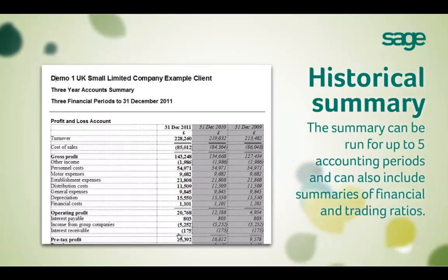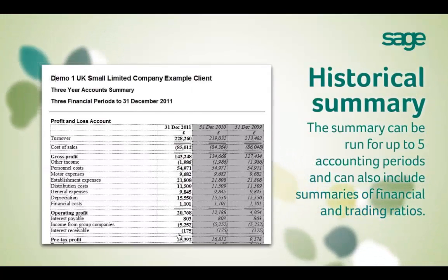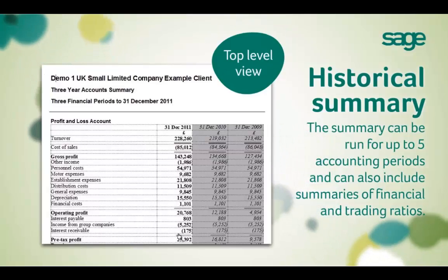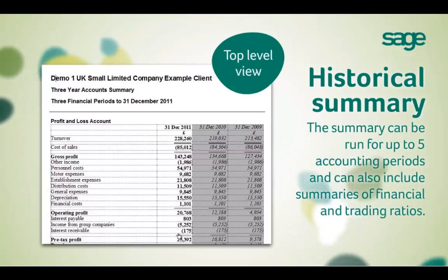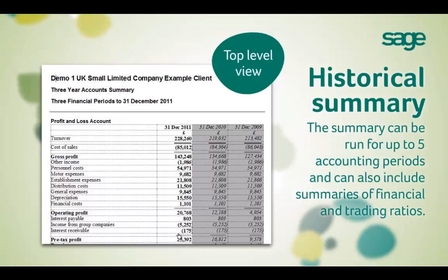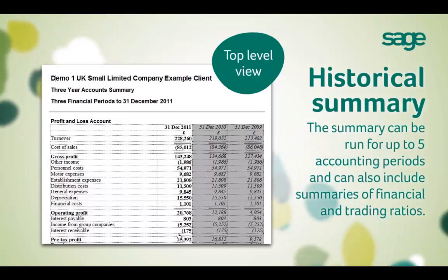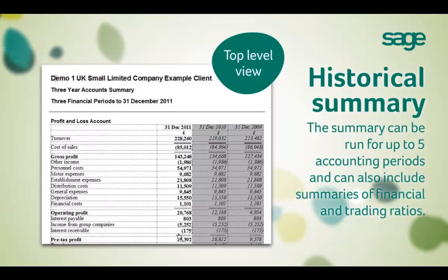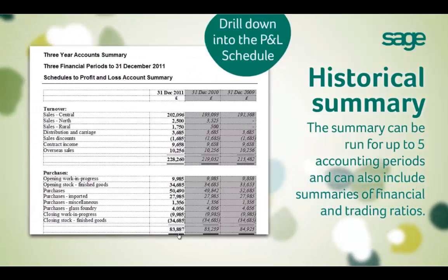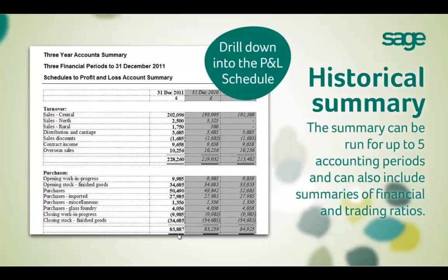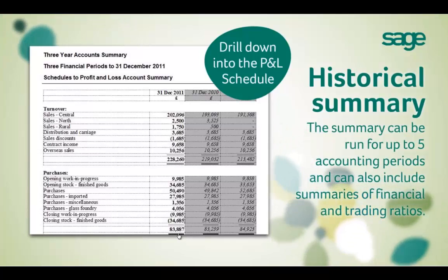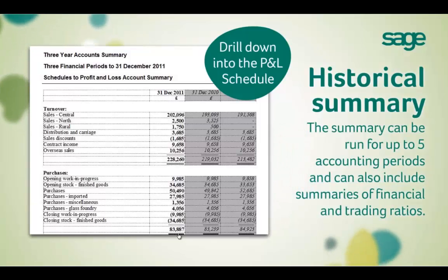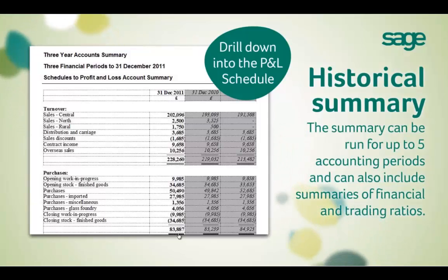The analytical review report can often highlight potential problem situations early enough to be able to take a different course of action. The historical summary report can be run for any client type to give up to five years' analysis including financial and trading ratios. The top level provides a nice summary report, and you can also drill down from the face of any report to the underlying values and transactions, allowing you direct access to the financial ratios summary.